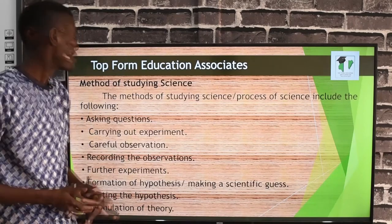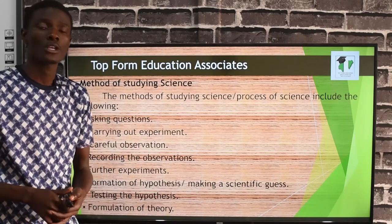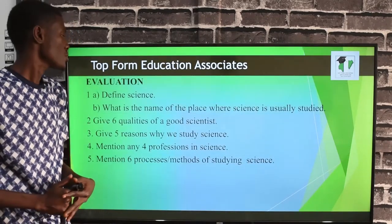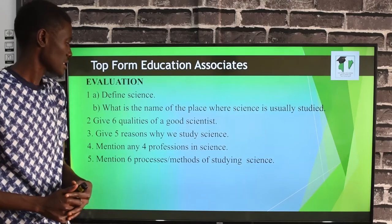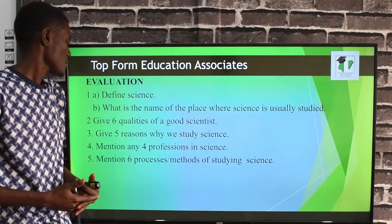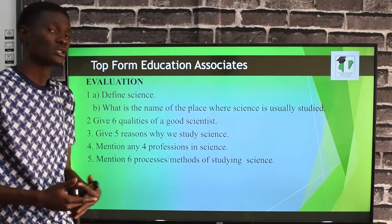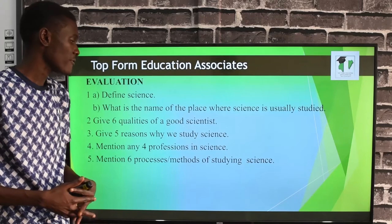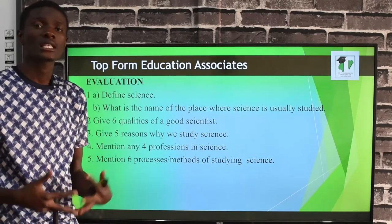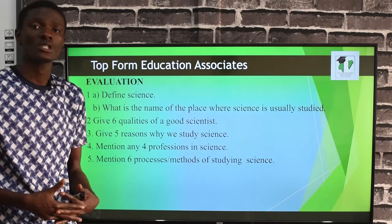We have come to the end of this lesson. Let's ask ourselves some questions. Question one: define science, and what is the name of the place where science is usually studied? Question two: give six qualities of a good scientist. Question three: give five reasons why we study science. Question four: mention any four professions in science. Question five: mention six processes or methods of studying science.